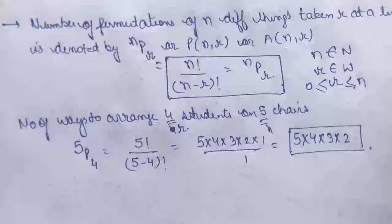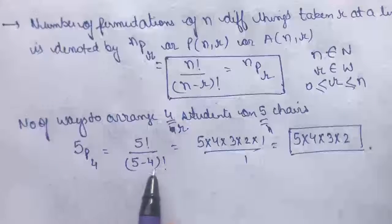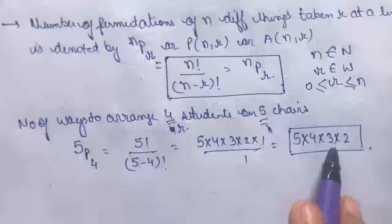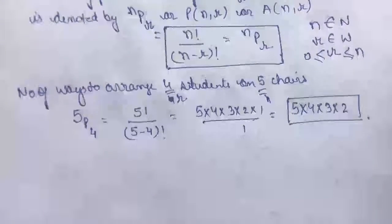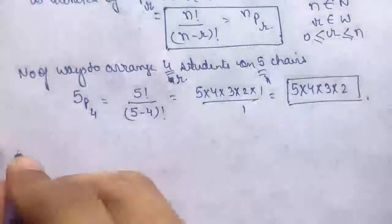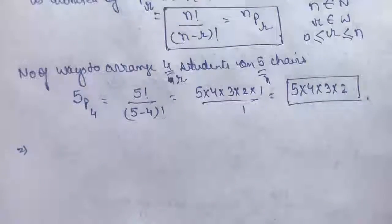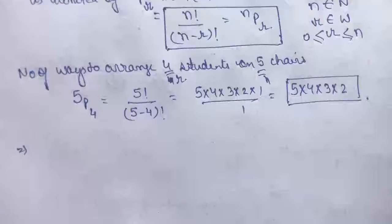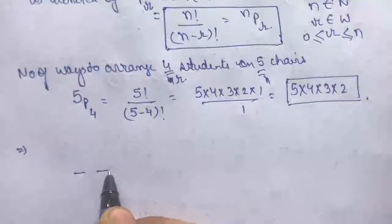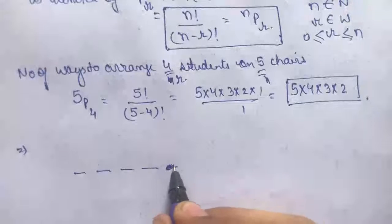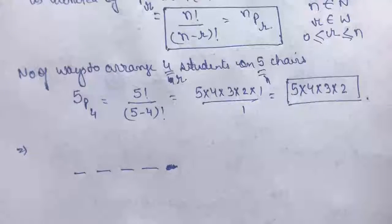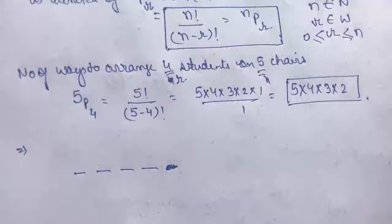The number of ways to arrange 4 students on 5 chairs is 5P4 = 5×4×3×2×1. Another way of viewing this: we have 5 chairs and 4 students. How many number of ways to allocate them? For the first student, how many options are there? There are 5 options — 5 chairs available.